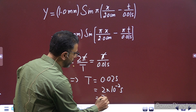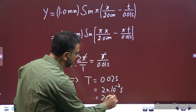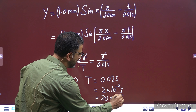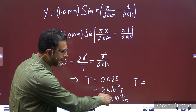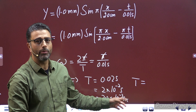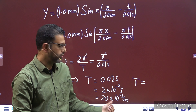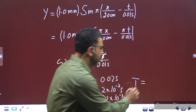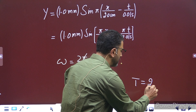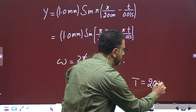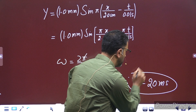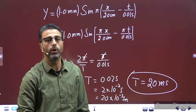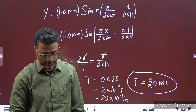0.02 seconds को ऐसे लिख सकते हैं: 2 × 10⁻² seconds, या 20 × 10⁻³ seconds। 10⁻³ is milli, so we can write 20 milliseconds। So T = 20 milliseconds — यह time period हमारा आगया।